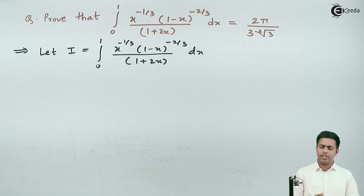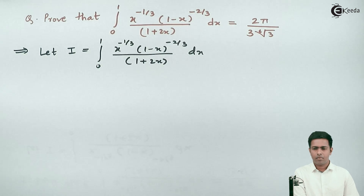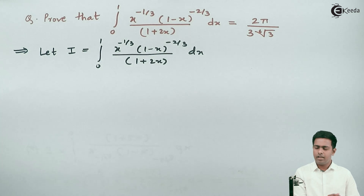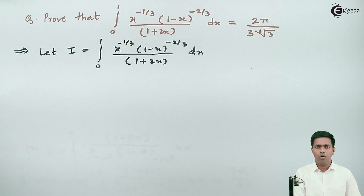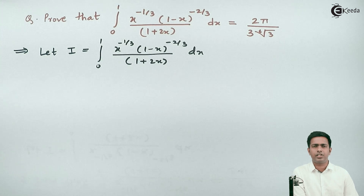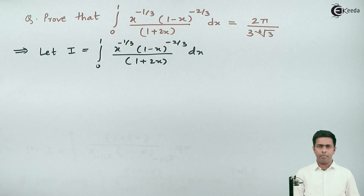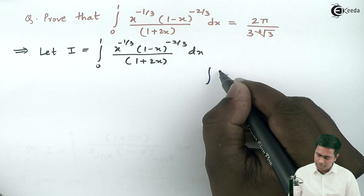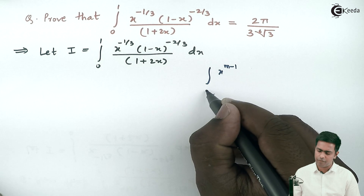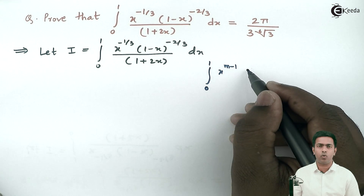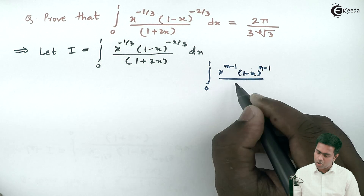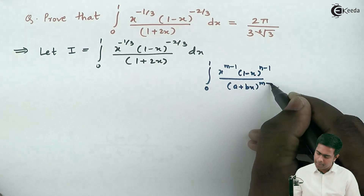I've considered this given integration as I. To get the value 2π upon 3 times the 6th root of 3, we observe the term inside the integration. Since we want to solve this using the beta function, this term must match with the definition of the beta function, so we perform integration by substitution. The matching form is the integration from 0 to 1 of x raised to (m minus 1) times (1 minus x) raised to (n minus 1) upon (a plus bx) raised to (m plus n), dx.